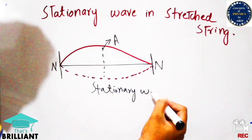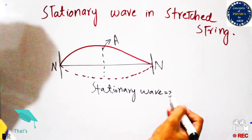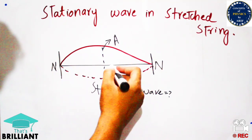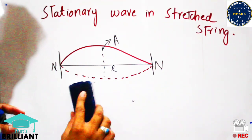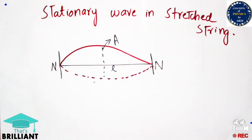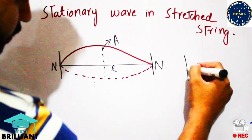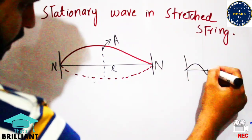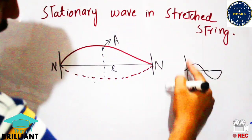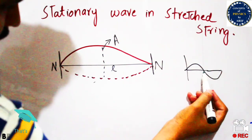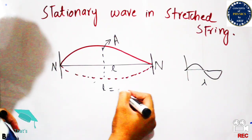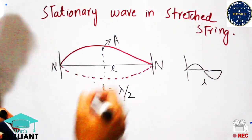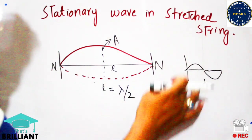A stationary wave is one in which crests and troughs are produced in the same region, above and below. The length of the string is known as l, and the distance covered by the wave motion is known as lambda over 2, because it is a half wavelength. We are dealing with only half a complete wavelength, so l is equal to lambda over 2.